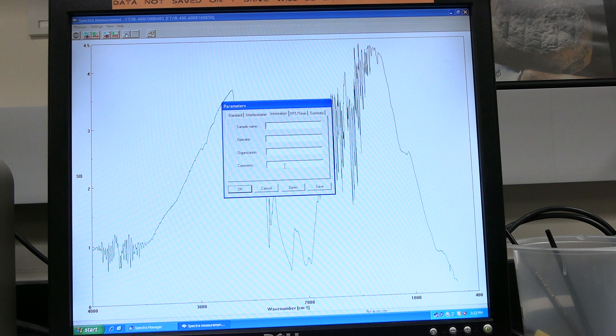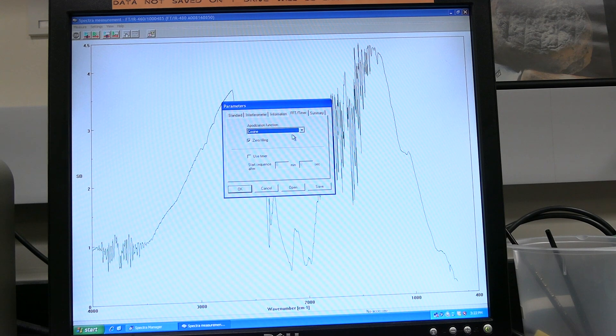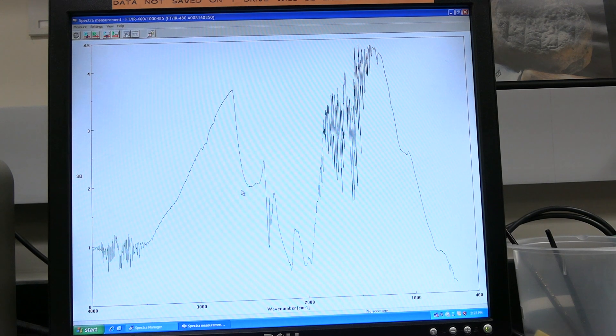Input the sample information. Click on the FFT slash timer tab. Apodization function should be set to cosine. Click on the summary tab. Click on OK to set the parameters.